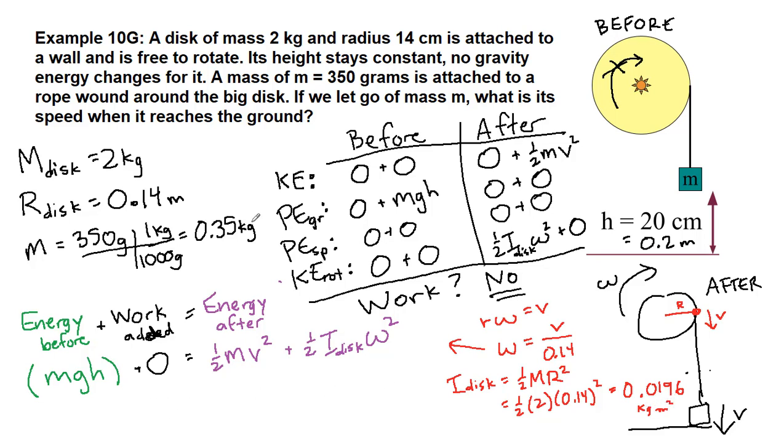All right, so let's plug in things that we have. So the little mass, 0.35 times 9.8 times 0.2, is equal to one-half times 0.35 times v squared plus—and this is where we're plugging in the things that I've color-coded red here on the right side—one-half times 0.0196 times v over 0.14 squared.